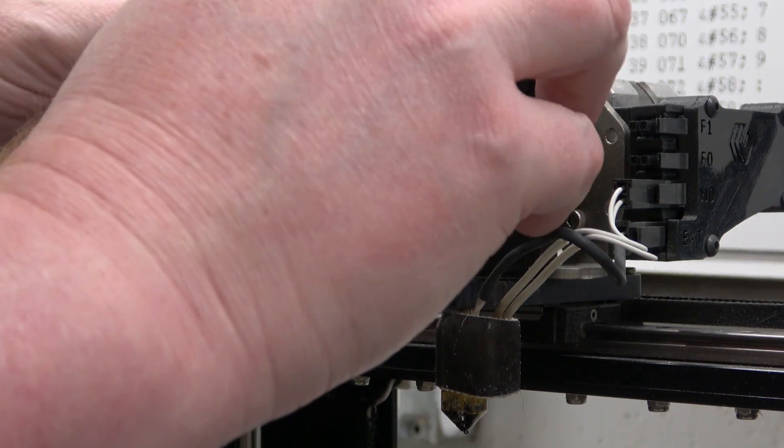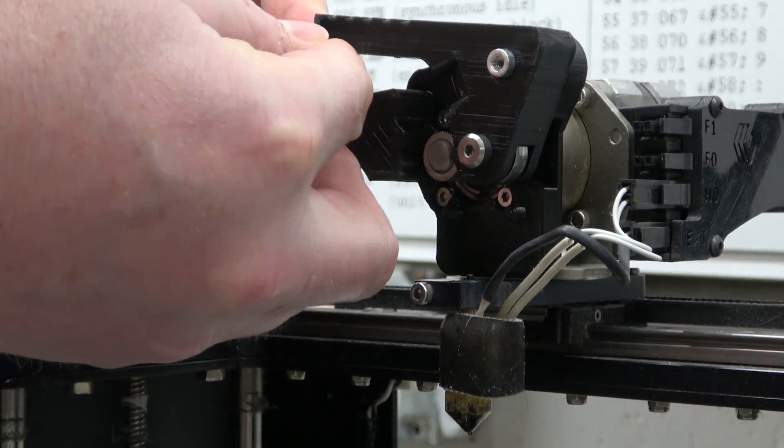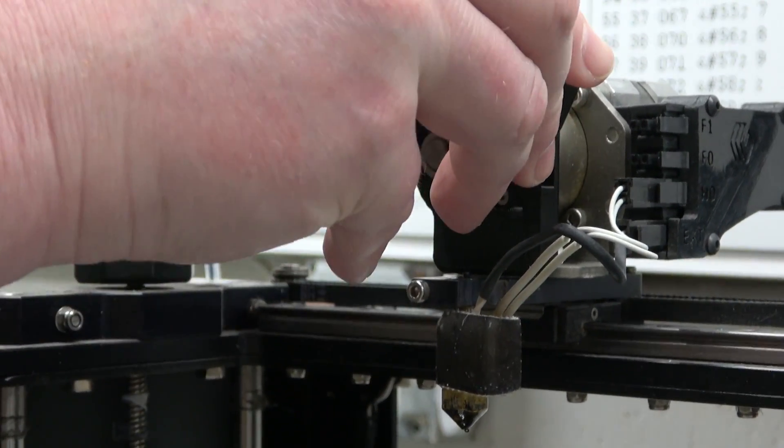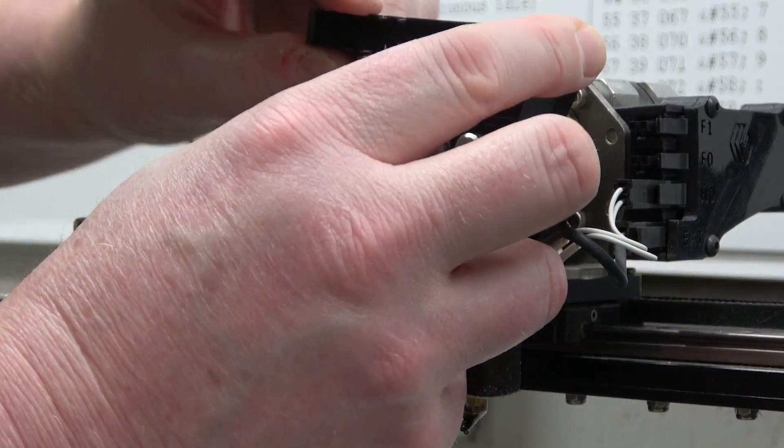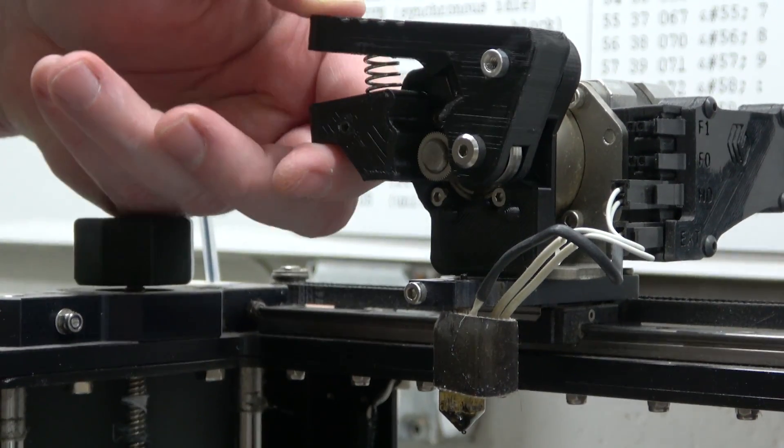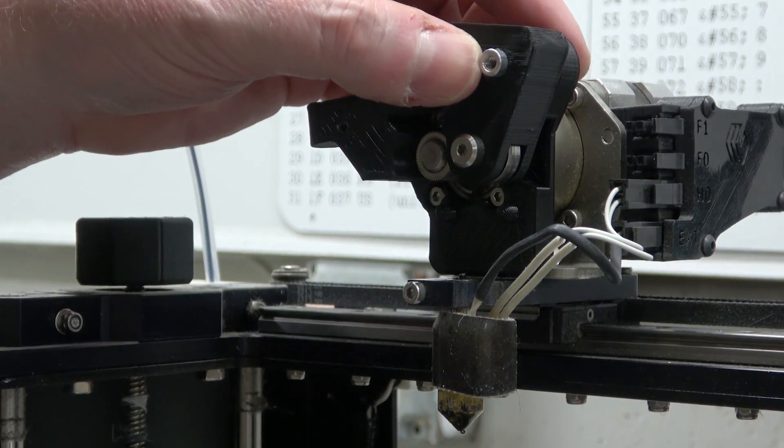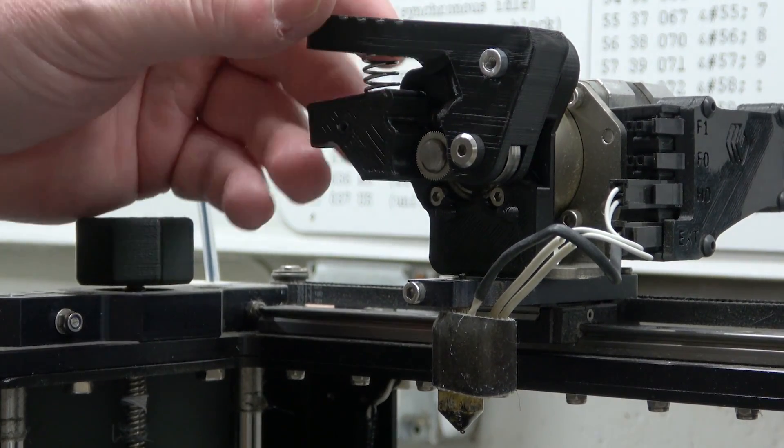So if some aliens came down to earth they'd be like oh you have a base ten system because you have ten fingers. How quaint. Of course those same aliens would probably have a base 300 system because they've got a hundred and fifty ganglia on each hand.